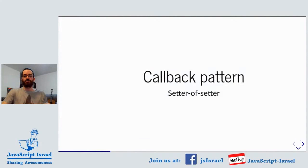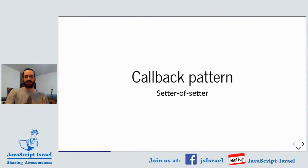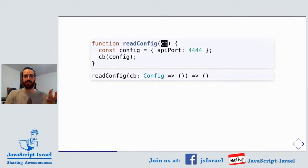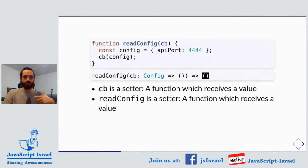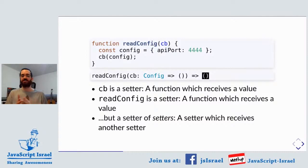So let's start walking up the setter hierarchy and begin with callbacks. Let's take a function like readConfig — it accepts a callback. We have our config object and we call the callback with our config. Let's look at the signatures: a callback is a function which receives a value and doesn't return anything — that's a setter. Now readConfig is also a function that receives a value and doesn't return anything — that's also a setter. So readConfig is a setter of setters. It's a setter which receives another setter.